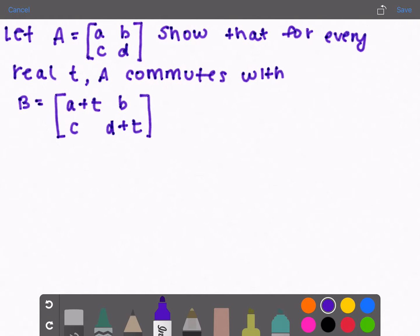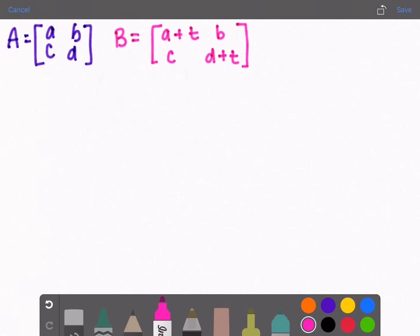So that would mean A times B equals B times A for any value of t if A looks like this and B looks like this. We will start by doing A times B.